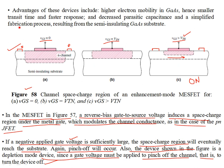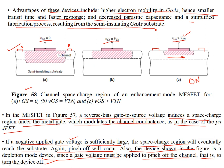To establish current, VGS must be at least the threshold voltage. The transistor can then be biased in the non-saturation or saturation region. Advantages of MESFET devices include higher electron mobility due to gallium arsenide compared to silicon, smaller transit times, faster responses, decreased parasitic capacitance, and a simplified fabrication process resulting from the semi-insulating gallium arsenide substrate. Indium phosphide can also be used, resulting in even lower transit times and faster switching.